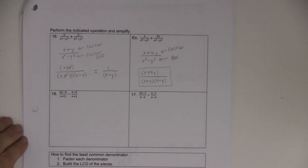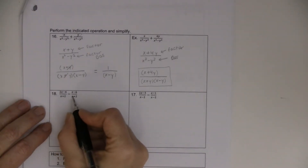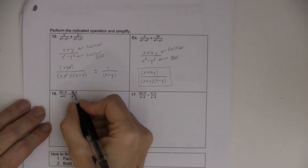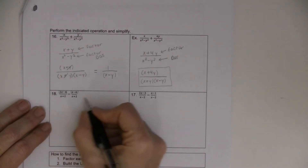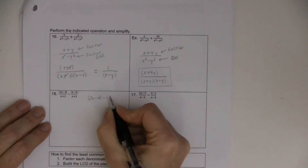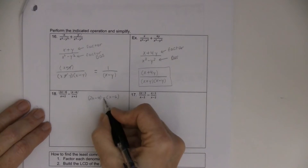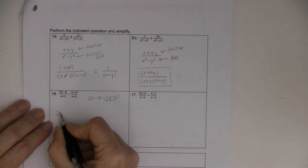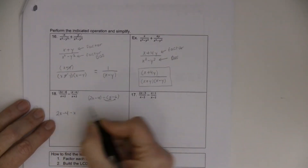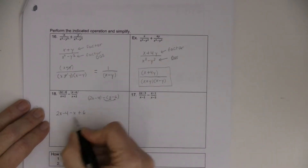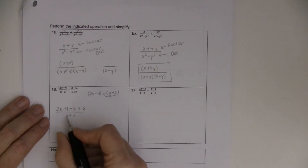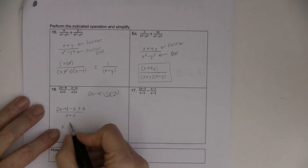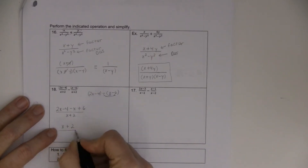Problem 18 is a subtraction. With a subtraction, you have to be a little bit more careful. x plus 2 is the common denominator — it has that. Really, there are parentheses implied here. And when you go to do that subtraction — 2x minus 4 — with those implied parentheses, you really need to distribute that negative. So this becomes 2x minus 4 minus x plus 6, all divided by x plus 2. And then when I combine like terms, 2x minus x is x, minus 4 plus 6 is positive 2.